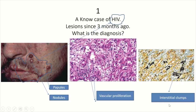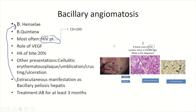Interstitial clumps are identified. All these findings — red to brown papules and nodules, vascular proliferation in the background of HIV — are indicative of bacillary angiomatosis, mainly caused by Bartonella henselae and to some extent Bartonella quintana, mostly affecting HIV patients when the CD4 count is lower than 200. The vascular proliferation in bacillary angiomatosis is due to VEGF, vascular endothelial growth factor, which signals the endothelial cells.